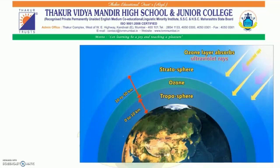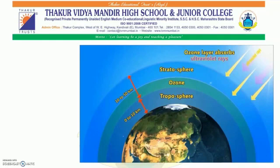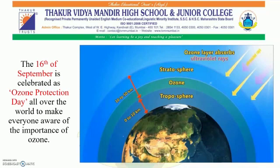We have already seen that there is a layer of ozone gas in the stratosphere. Ozone gas is not directly useful for the survival of living things, yet it is very important for us to have this layer around the earth. The ultraviolet rays coming from the sun are very harmful for living things. The ozone gas absorbs these rays and stops them from reaching the earth, and as a result, life on the earth is protected. The ozone layer is getting destroyed because of chemical gases like carbon tetrachloride or chlorofluorocarbons, which are used in air conditioners and refrigerators. The 16th of September is celebrated as Ozone Protection Day all over the world to make everyone aware of the importance of ozone.